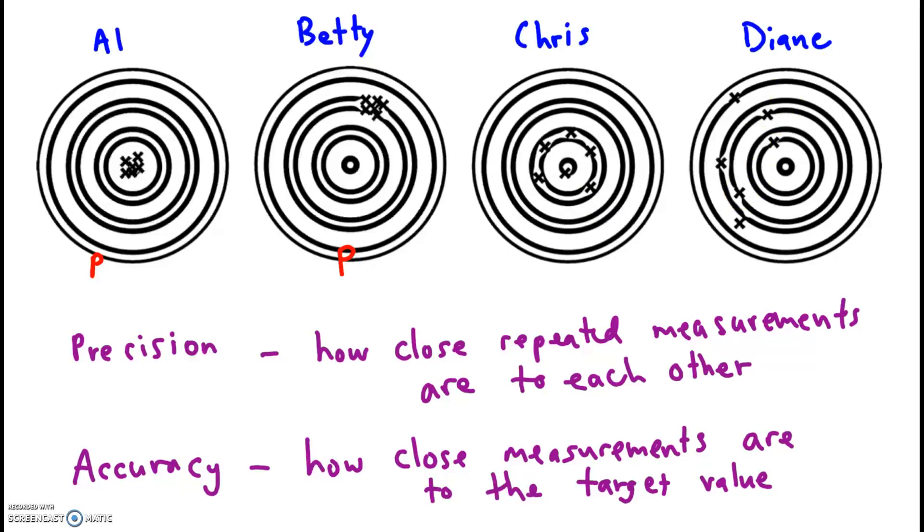All right, how about accurate? Well, look at Al. He is centered right on the target, so I'm going to say he's precise and accurate. Betty, on the other hand, I don't know. Look, that one is over, that one is off, this is off, that dart is off. She is consistently off.